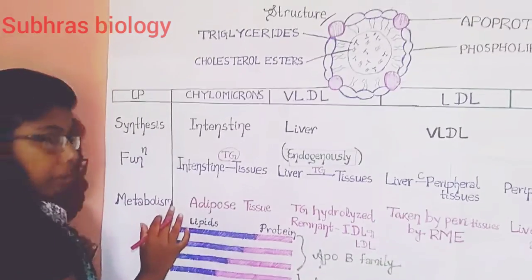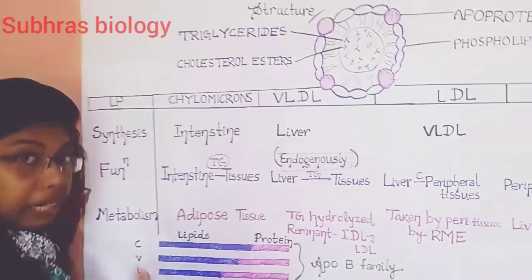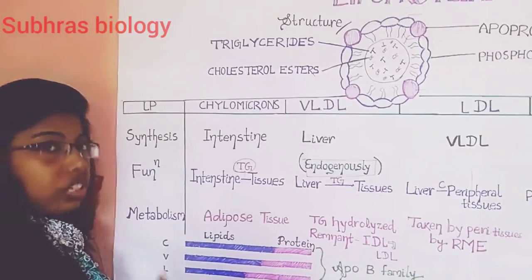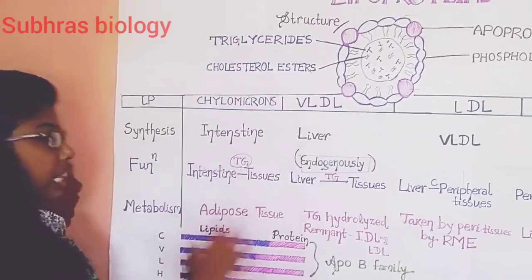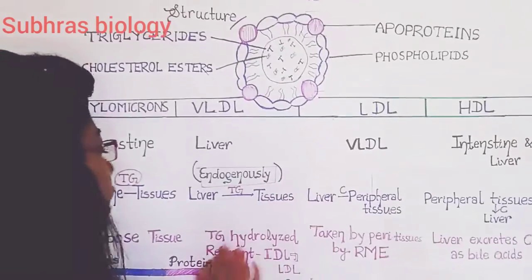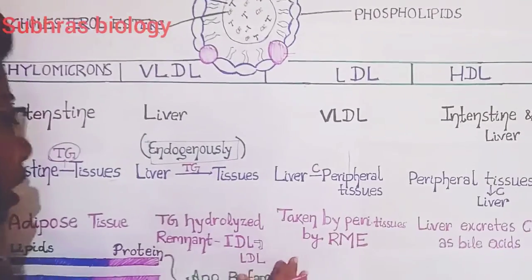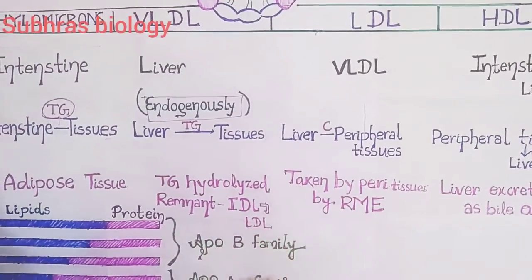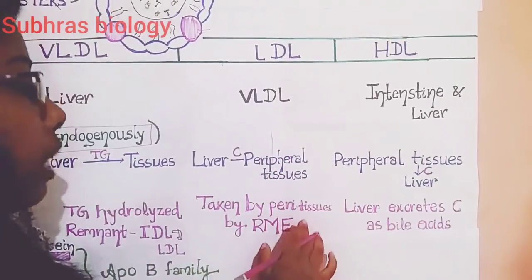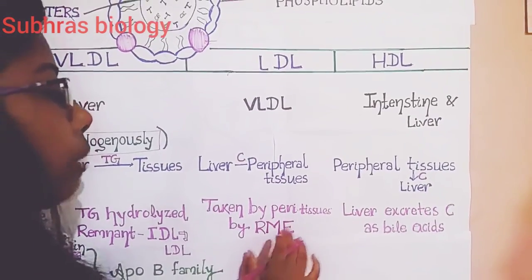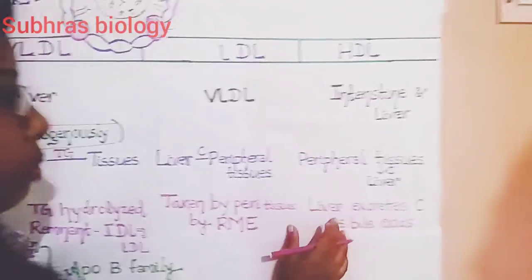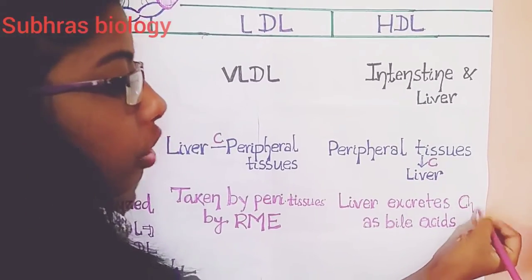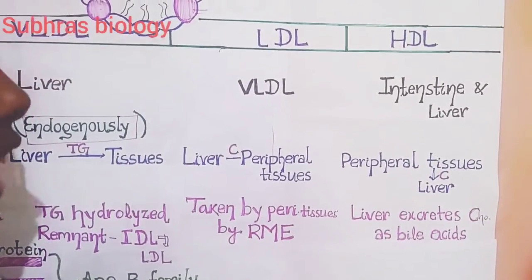Next, we are going for the metabolism of the lipoproteins — how these lipoproteins are metabolized. First is the chylomicron: they get attached to the adipose tissues or the skeletal muscles, and there they are metabolized. And the VLDL: these triacylglycerols or triglycerides get hydrolyzed, and the remnant intermediate-density lipoprotein gets converted into low-density lipoprotein. Next is the LDL, taken up by the peripheral tissues by receptor-mediated endocytosis. And the liver excretes cholesterol as bile acids.